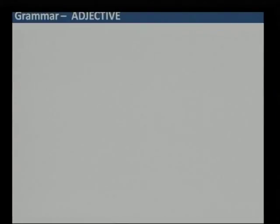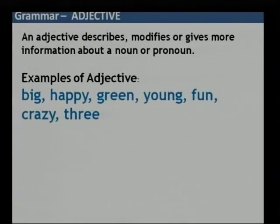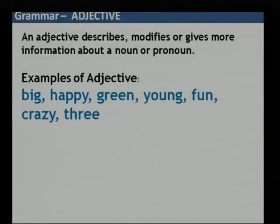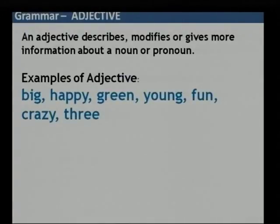Let us talk about adjectives. An adjective qualifies, describes, or modifies a noun and gives more information about the noun or pronoun. Examples: big, happy, green. For example, 'the car is really big' — the car is a noun, and big describes it, so big is an adjective. 'John is very happy today' — John is a noun, happy describes him, so happy is an adjective. 'I had a green apple' — green is an adjective because it defines the apple.